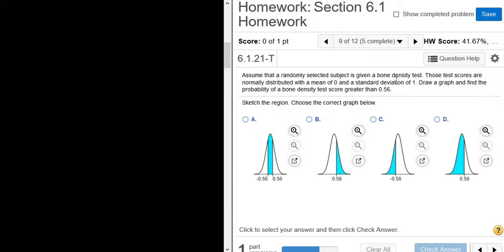Assume that a randomly selected subject is given a bone density test. Those test scores are normally distributed with the mean of 0 and a standard deviation of 1. Draw a graph and find the probability of a bone density test score greater than 0.56.